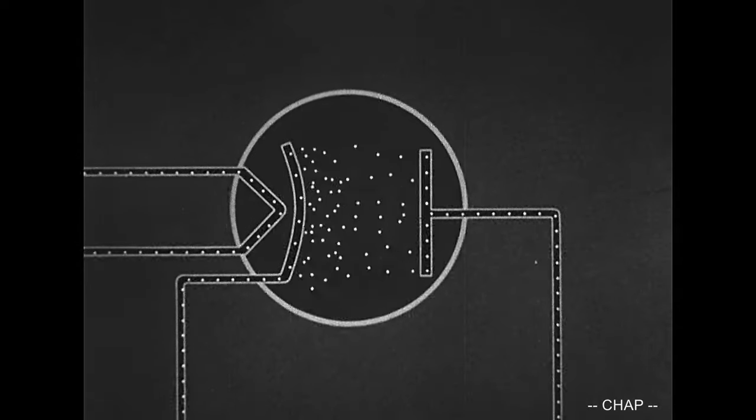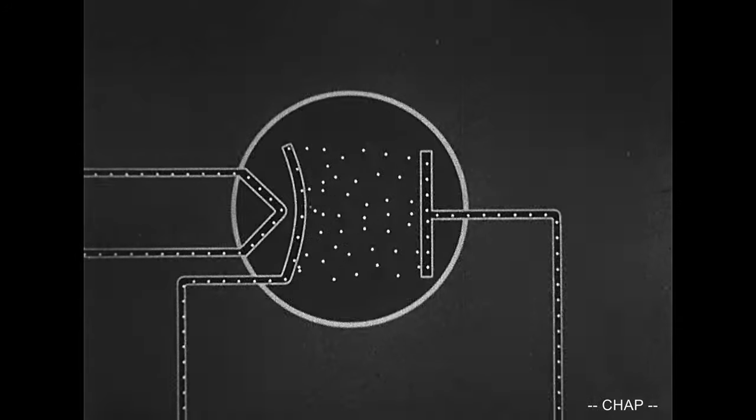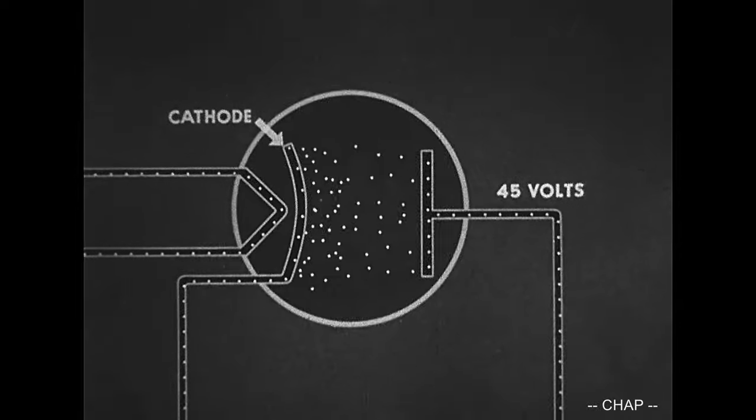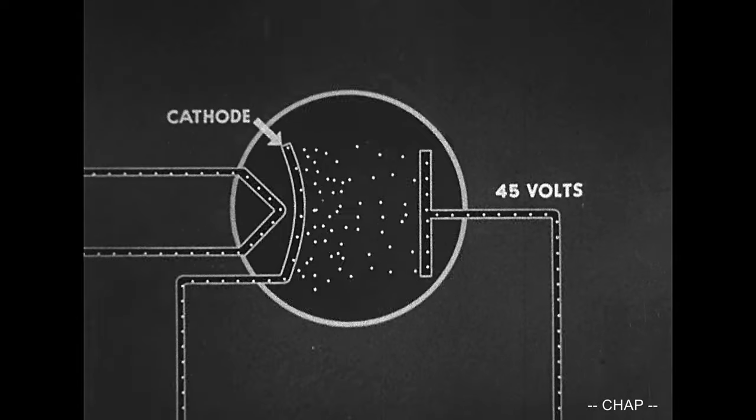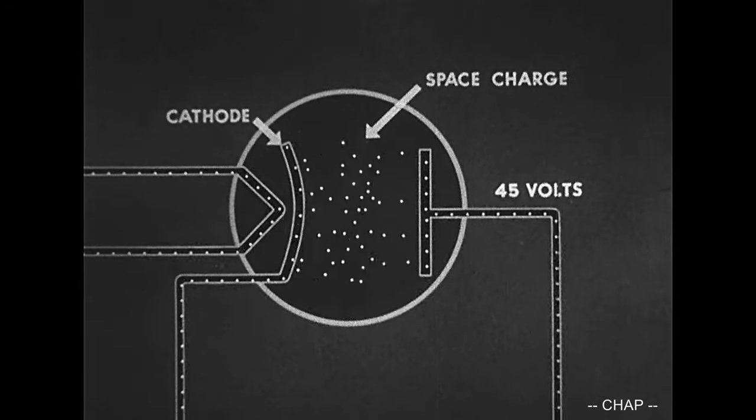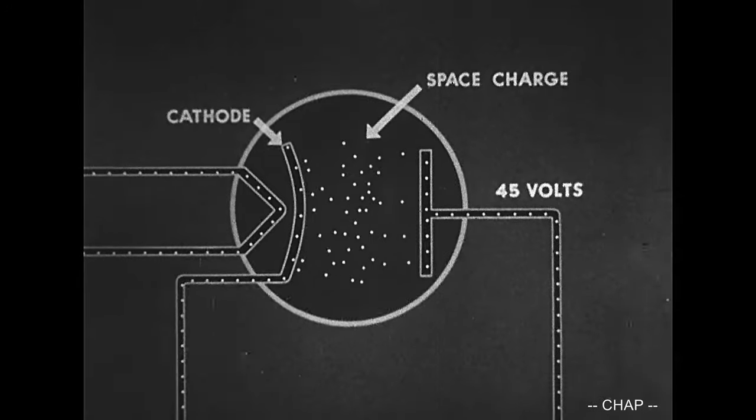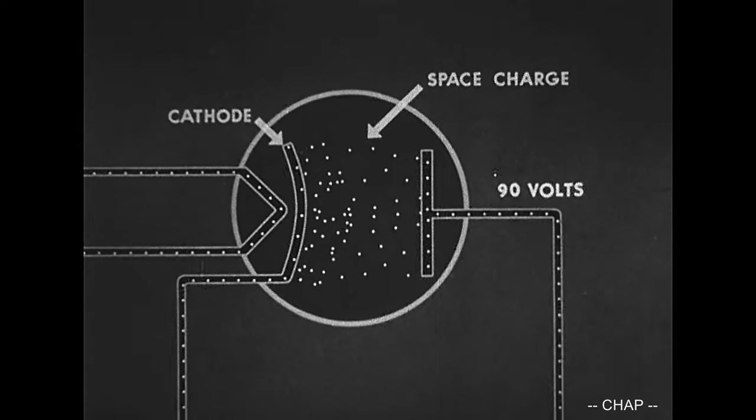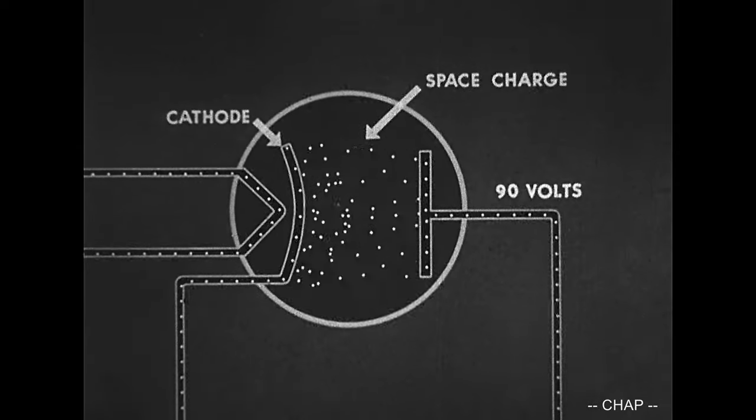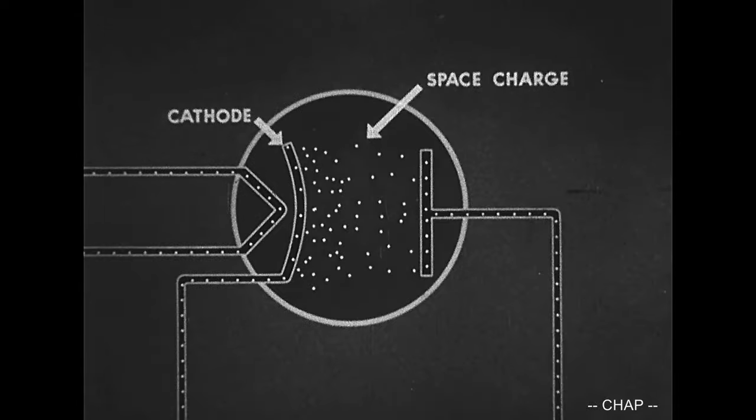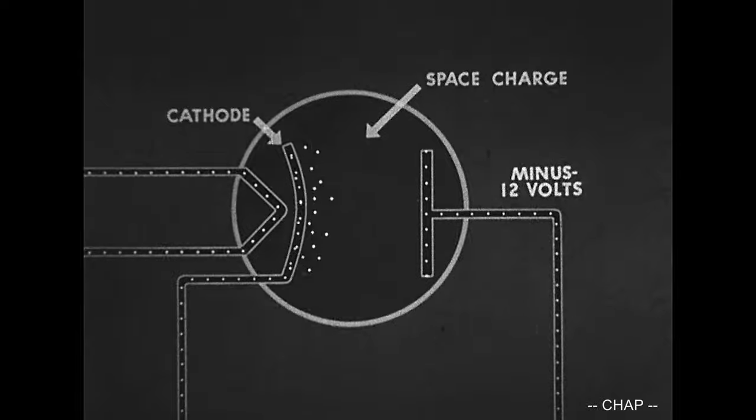The electron flow from the cathode is largely controlled by the voltage on the plate. Some electrons lacking sufficient velocity do not reach the plate. This is called space charge. The electrons remain between cathode and plate, hindering electron flow. However, increased plate voltage overcomes much of the retarding effect of this space charge. A strong negative charge on the plate may stop all electron flow.